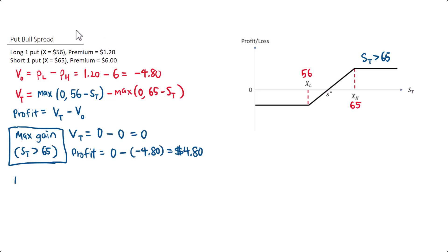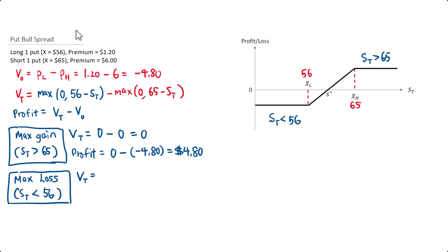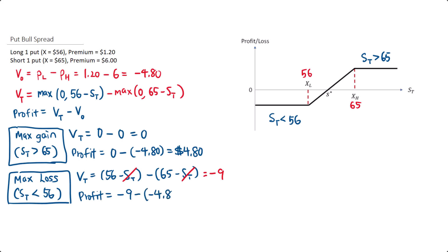For the maximum loss, the condition is when the share price is lower than the strike price of the lower put, which is 56. In this case, both options would be in the money. The value at expiration is (56 minus the share price) minus (65 minus the share price). Simplifying, the share price terms cancel, leaving 56 minus 65, which is negative 9. The profit equals negative 9 minus the initial value of negative $4.80, giving negative $4.20. So the maximum loss is $4.20.